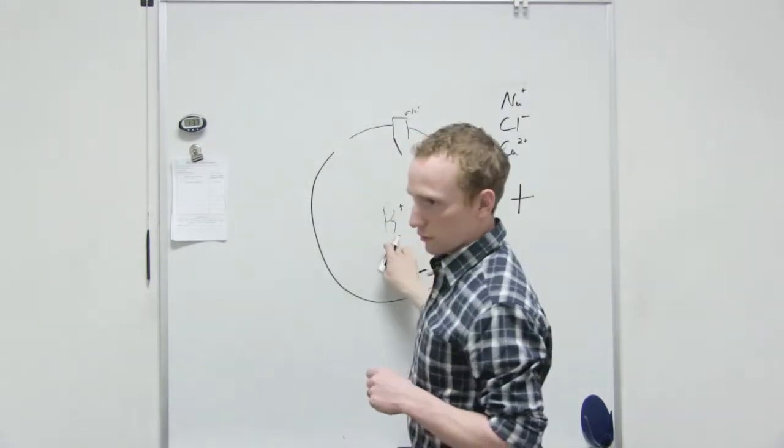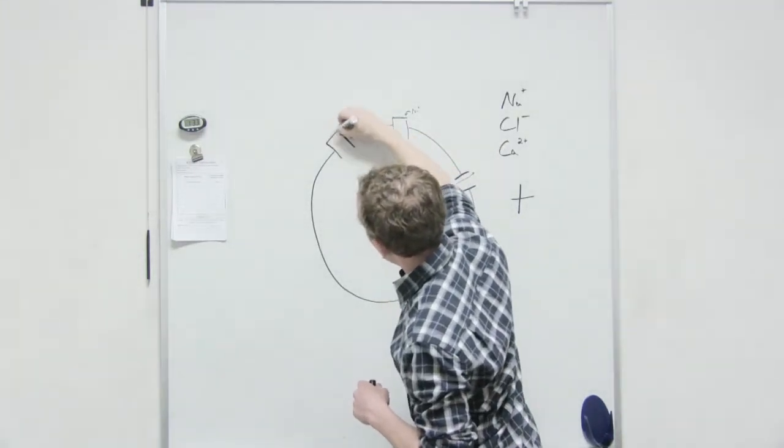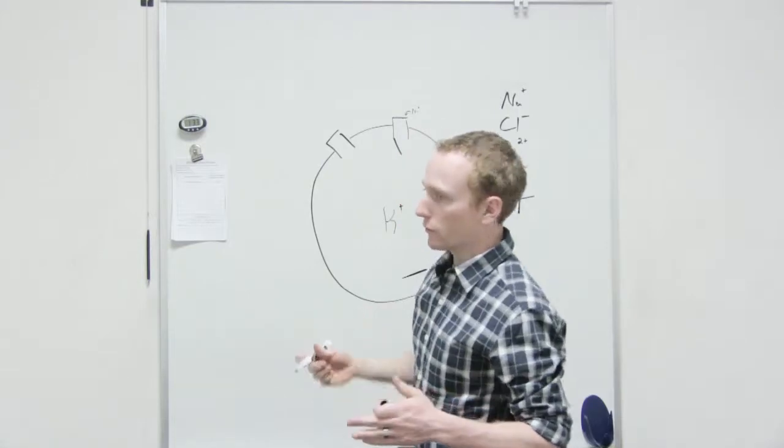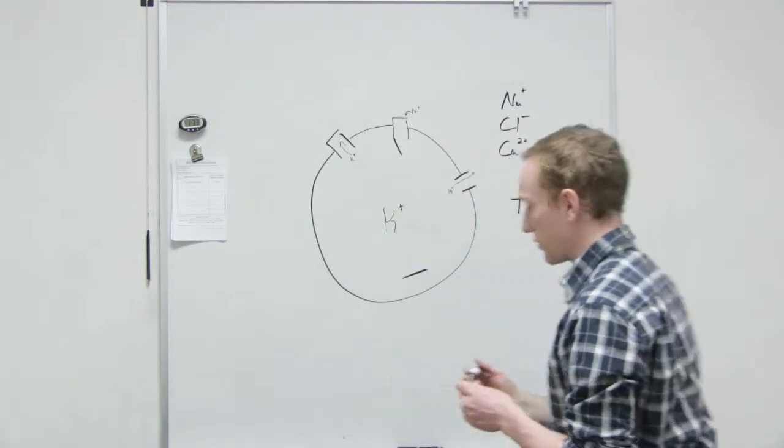Then we have a potassium voltage gate. So, potassium, it just has one door. Where does it want to flow? It wants to go outside the cell.